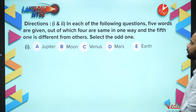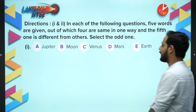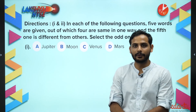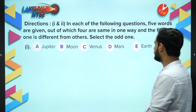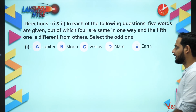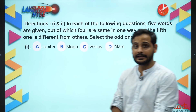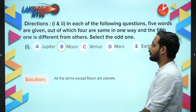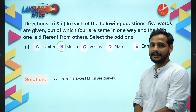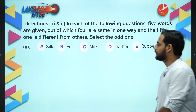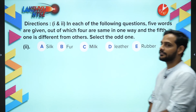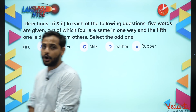Next question: Jupiter, Moon, Venus, Mars, and Earth - which one is different? Jupiter, Venus, Mars, and Earth are all planets, but Moon is a satellite. So Moon is the odd one out.